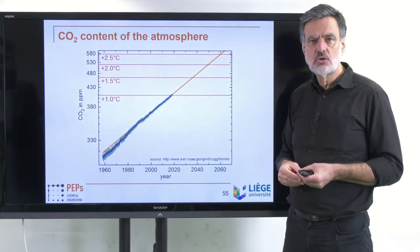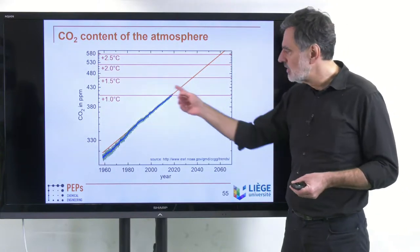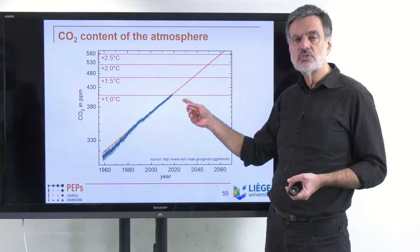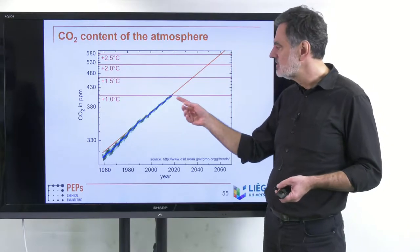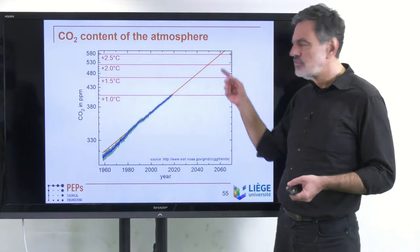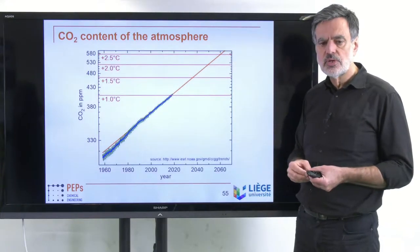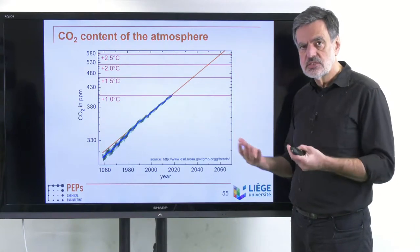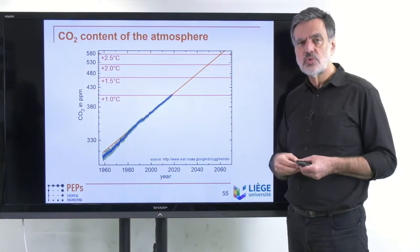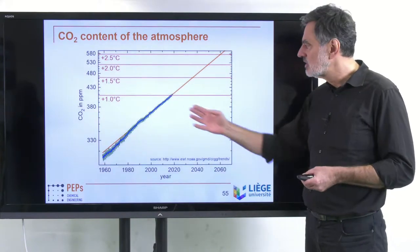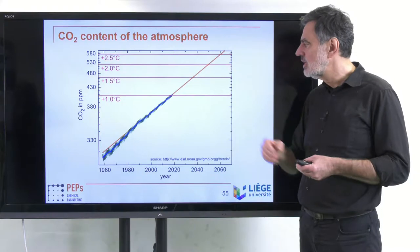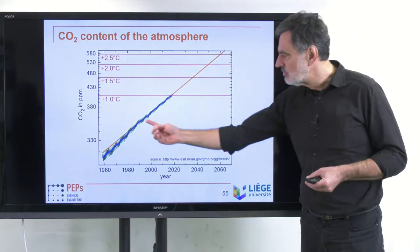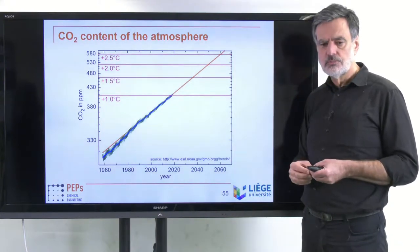We already observe the consequences today with significantly more extreme weather events, and we know that will increase quite significantly. The probability and intensity of these extreme weather events will increase significantly if we continue as in the past, following that straight line further into the future.